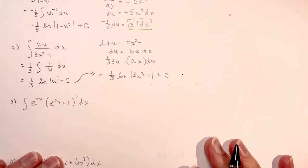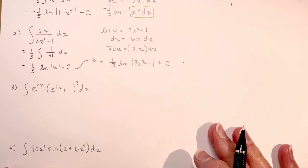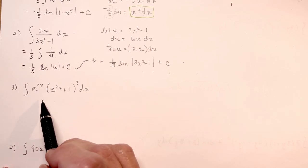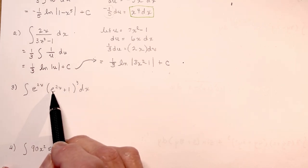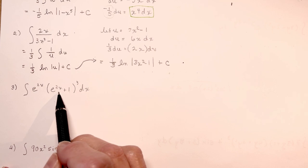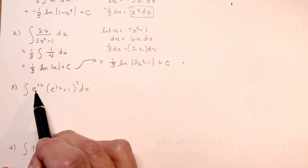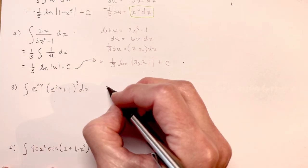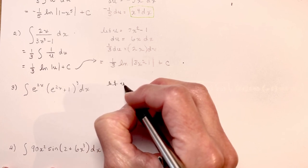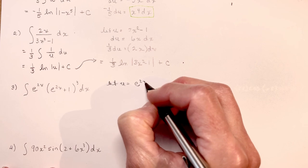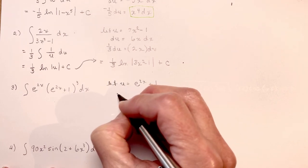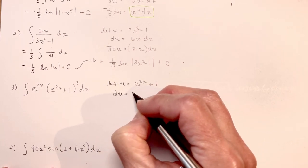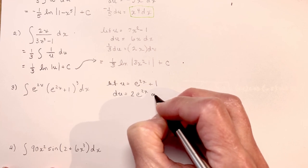Let's look at an e to the x question. This time I have the integral of e to the 2x times the quantity e to the 2x plus 1 cubed. Remember that the derivative of e to the 2x would be 2e to the 2x — that's 2 times as much as I want. So we'll make the inside part the u: let u equal e to the 2x plus 1, and du is going to be 2e to the 2x dx.